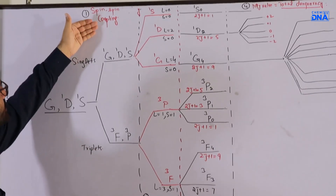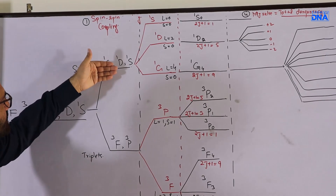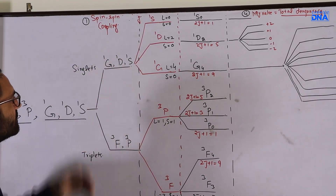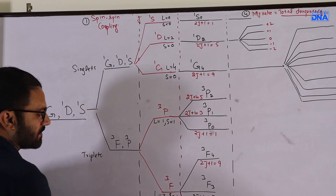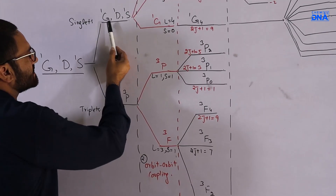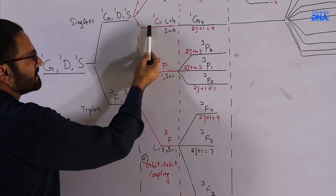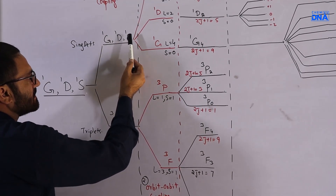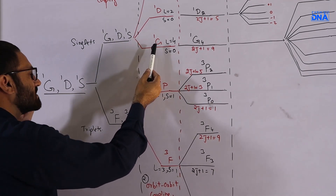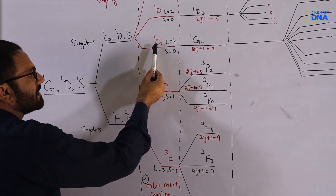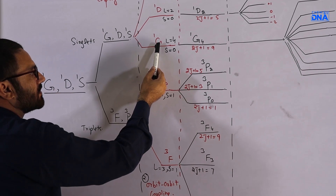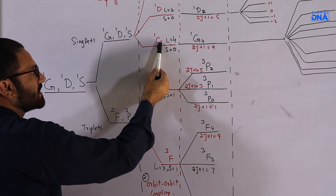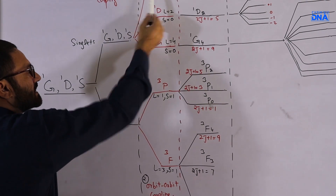Spin-spin coupling gives us the singlets and triplets. Moving to orbit-orbit coupling: the second rule states that if the spin degeneracy is the same, the spectroscopic terms having higher L value will fall lower in energy. It is apparent that ¹G has L value 4, which is lower in energy compared to ¹D and ¹S singlets.